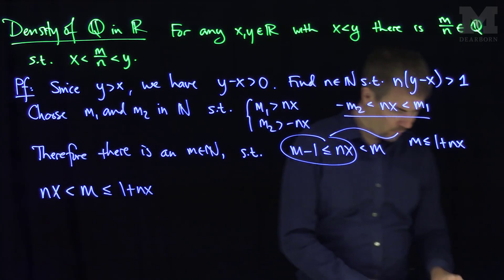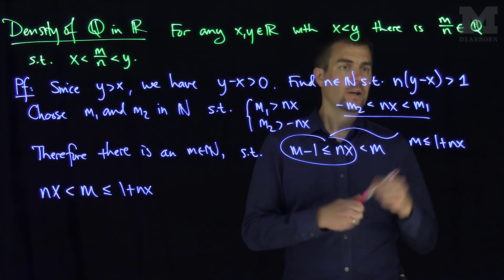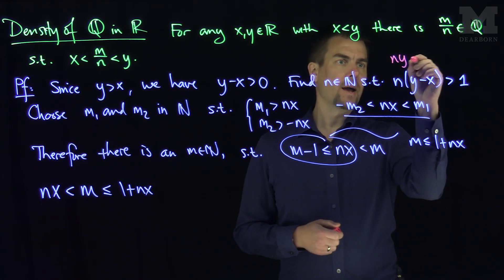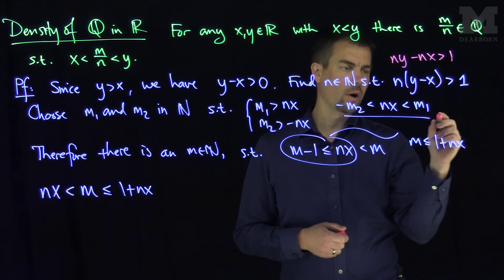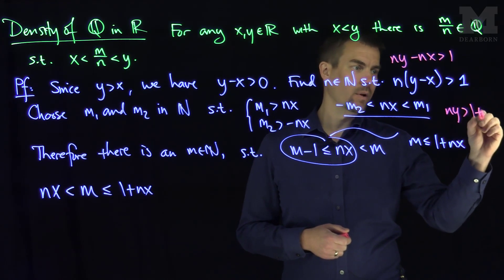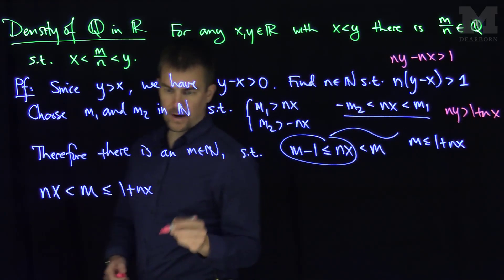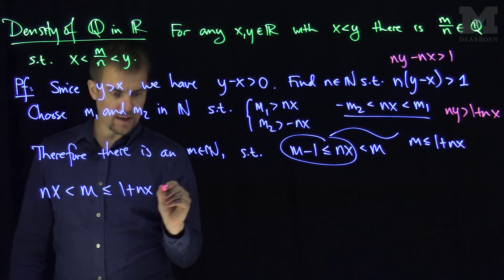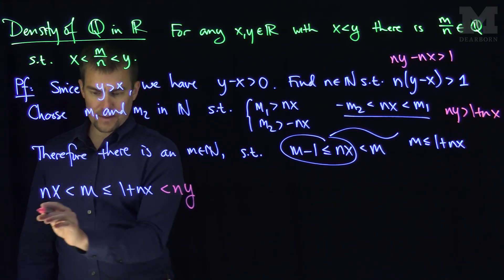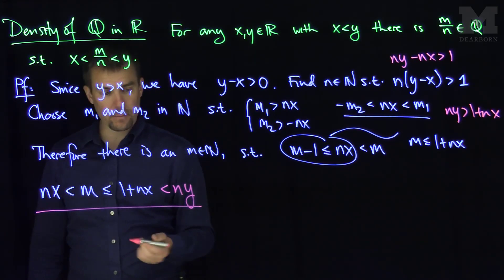But now we come back to our original Archimedean application, and this says that ny minus nx is bigger than one, so that ny is bigger than one plus nx. So this one plus nx is majorized by n times y. And now I can take this string of inequalities and divide by n.